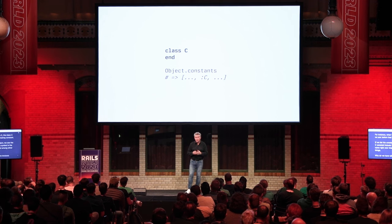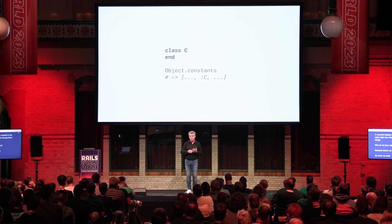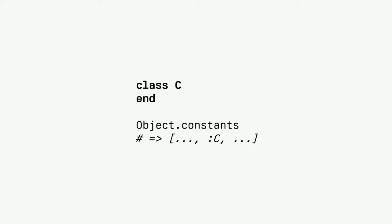C is listed among other things. Since there are no types, when we write String with a capital S, that is not a type — that's a constant. It's a top-level constant and therefore belongs to Object's constant table as well.